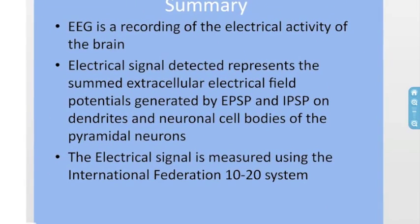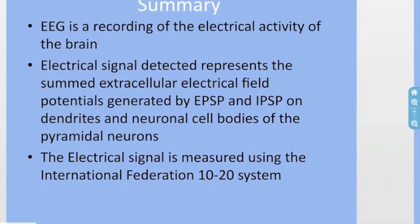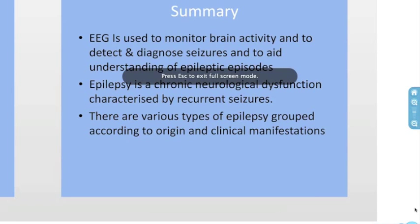In summary: the EEG is a recording of the electrical activity of the brain. The electrical signal detected represents the summed extracellular electric field potentials generated by EPSPs and IPSPs on dendrites and neuronal cell bodies of pyramidal neurons. The electrical signal is measured using the International Federation 10-20 system. The EEG is used to monitor brain activity and to detect and diagnose seizures and to aid the understanding of epileptic episodes. Epilepsy is a chronic neurological dysfunction characterized by recurrent seizures, and there are various types grouped according to origin and clinical manifestations. Thank you.